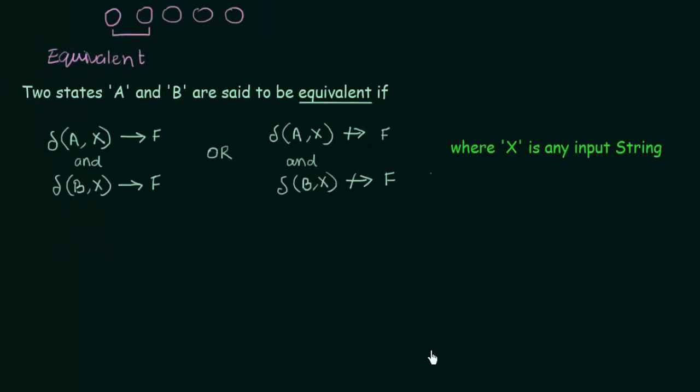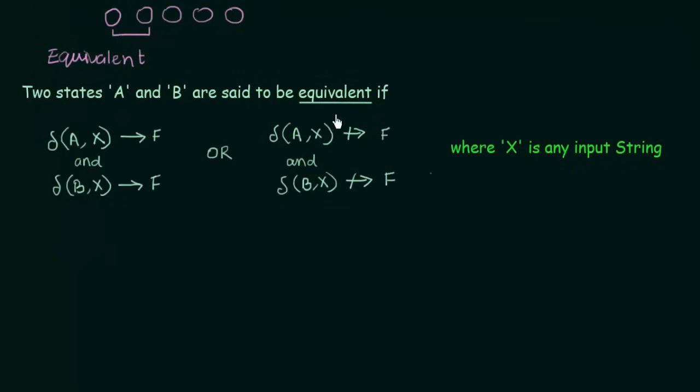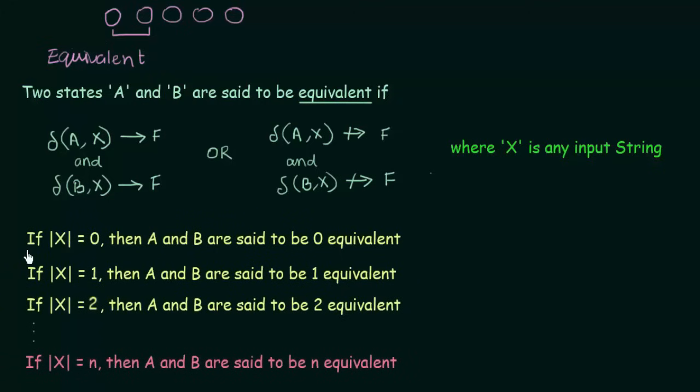Types of equivalence. There are some different kinds of equivalences. Like 0 equivalence, 1 equivalence, 2 equivalence and so on. So, next we will be seeing what is that. So, here we see that if modulo X equals 0, this means that if the length of the string X, here we have taken X as any input string, if the length of that string X is 0, then A and B are said to be 0 equivalent.